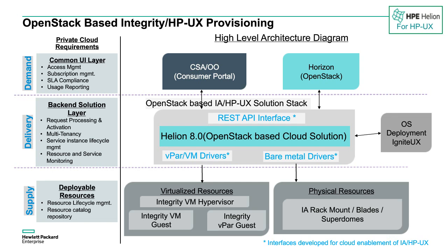This UI layer can be consumed either through the built-in Horizon dashboard, as well as CSA and operations orchestration consumer portals. These are all REST API-based interfaces, so customers are free to integrate with their own UI layer and have the same set of services exposed through Horizon. In the delivery layer — the middle layer — you see the back-end solution for request processing and activation, multi-tenancy and service management, and resource monitoring. The REST APIs and the VM, vPAR drivers, and bare-metal drivers are the ones that HPE has added around the core solution.